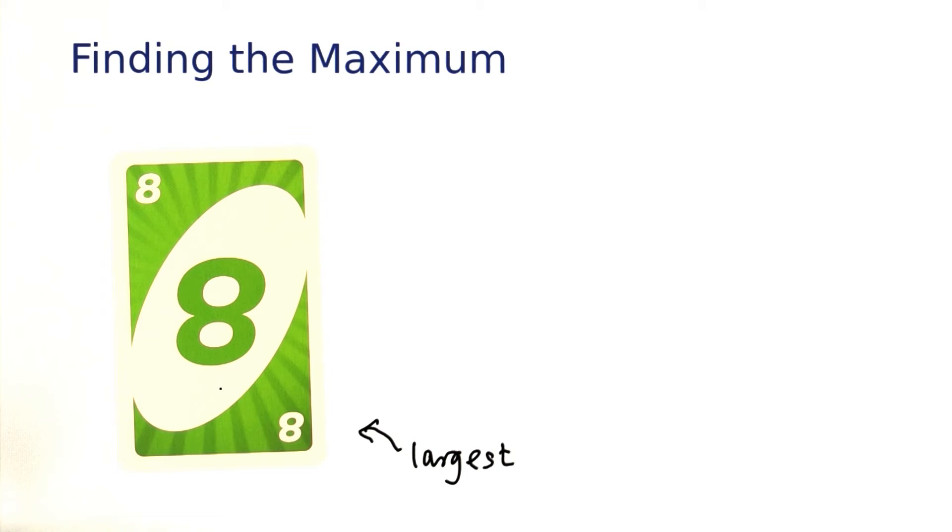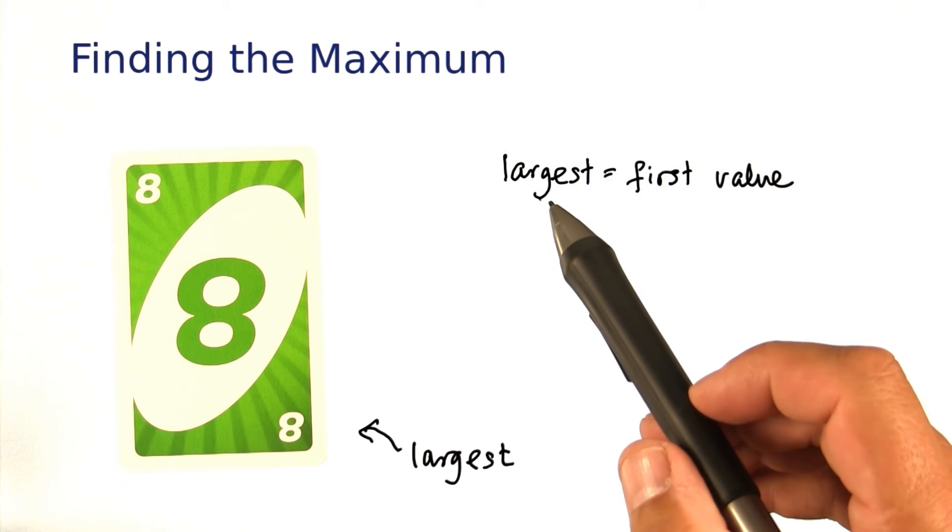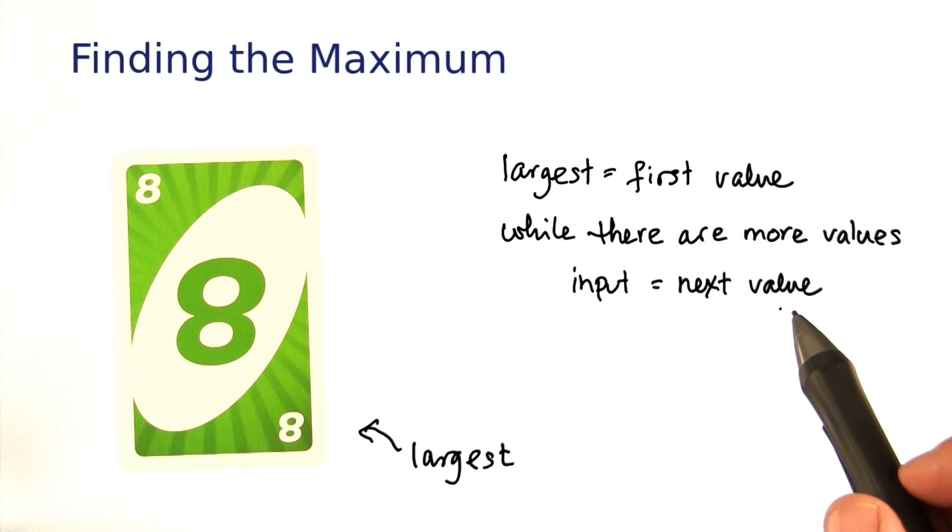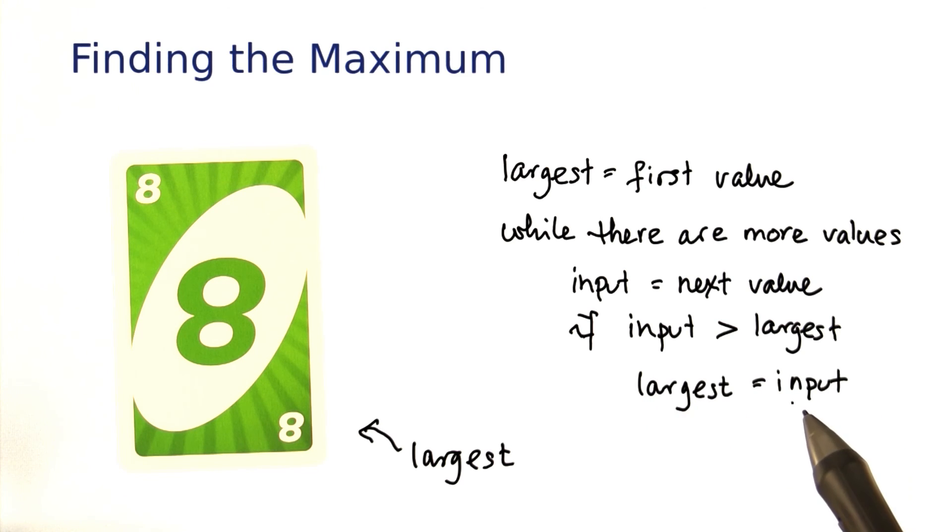In pseudocode, the algorithm would look like this. I start out letting largest be the first value. While there are more values, I read the next value. And if that value is larger than what I thought the largest was, I change my mind.